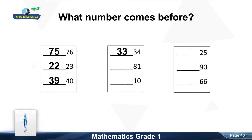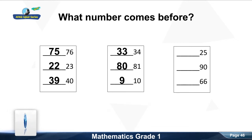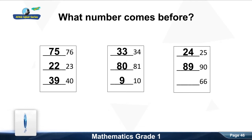What number comes before eighty-one? Good, eighty. What number comes before twenty-five? Good, twenty-four. What number comes before ninety? Good, eighty-nine. What number comes before sixty-six? Good, sixty-five.